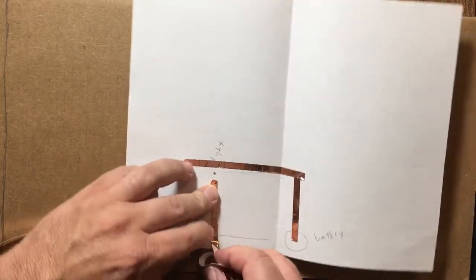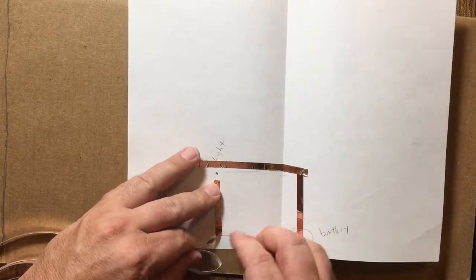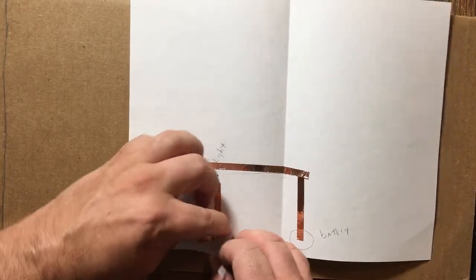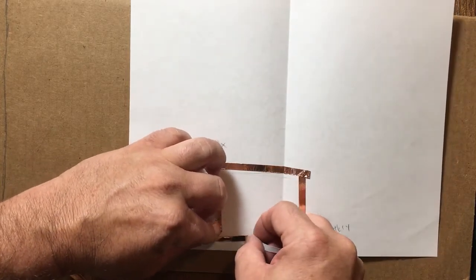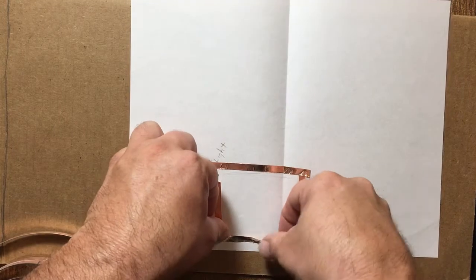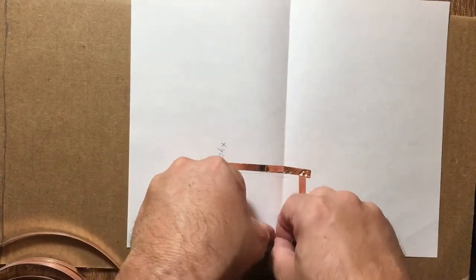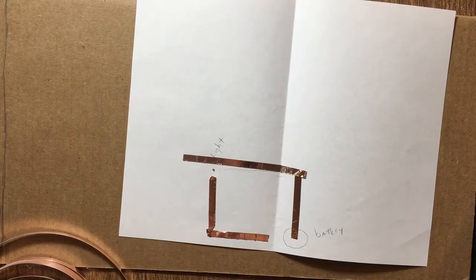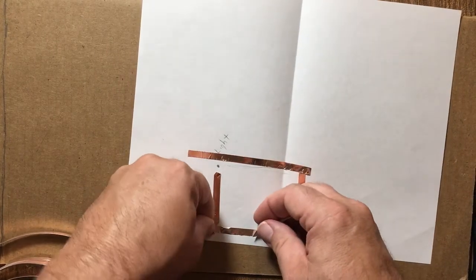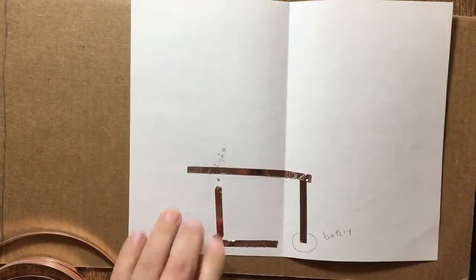So we come here. I want to go to the right, so I go left first, get a 45-degree angle, hold it down, and come back. It's still one whole piece of copper.